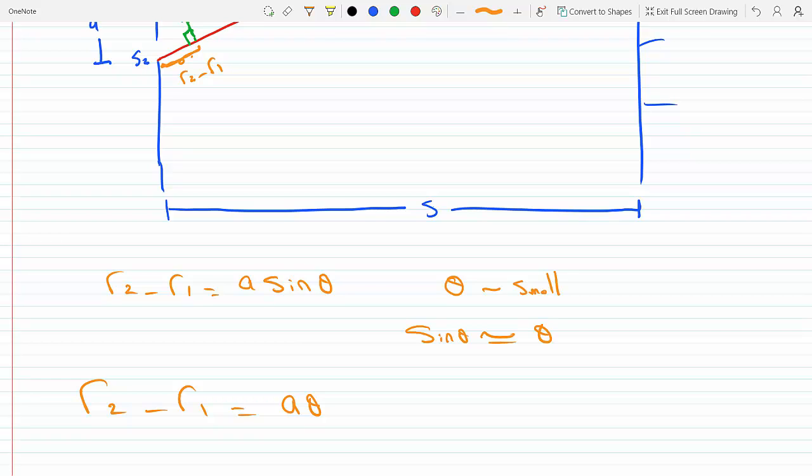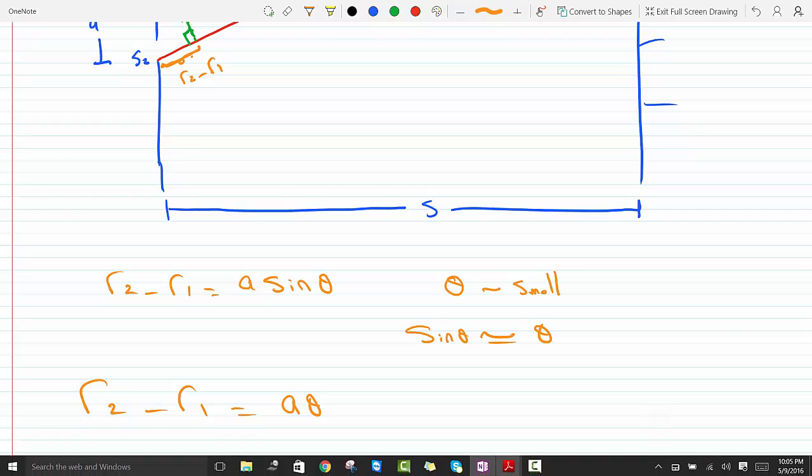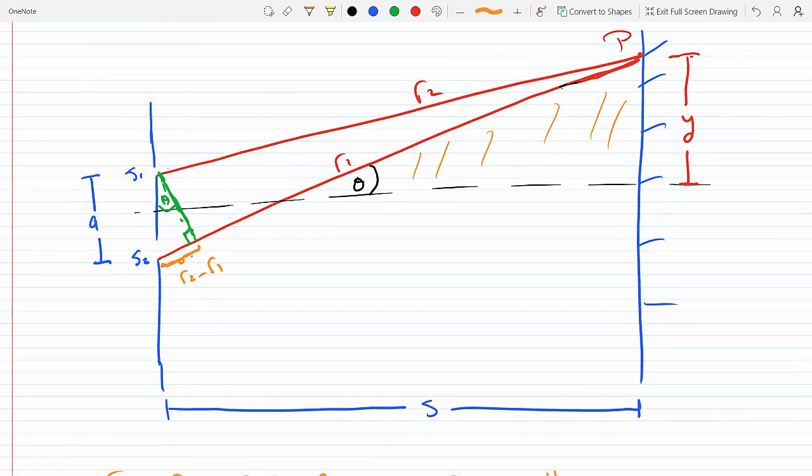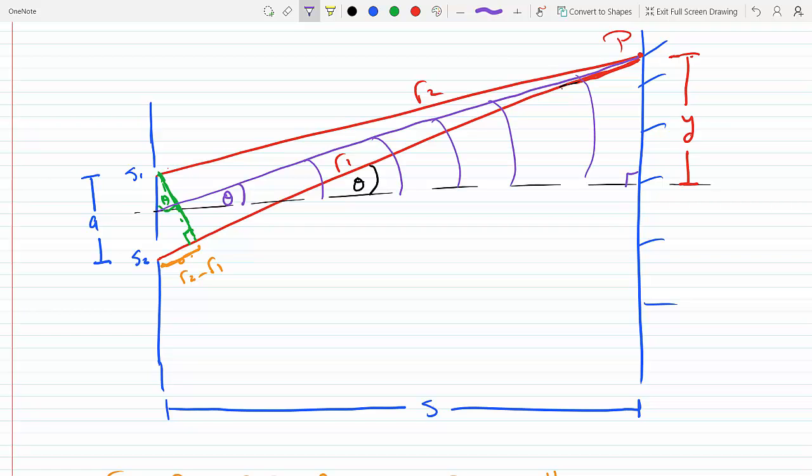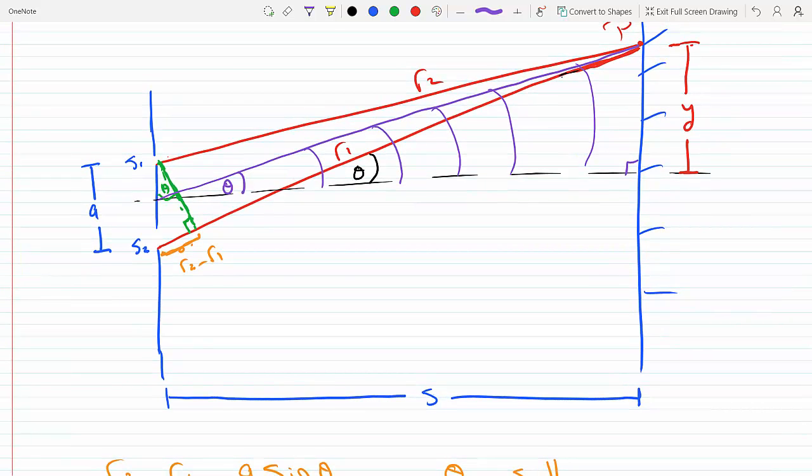Let me show you here that if I also connect this line here with the same point P, this angle here is also theta because we are saying that r1 and r2 are very long to a point that they're almost the same, which means they're almost parallel to each other. So we can do this approximation, and from this triangle, we can see that sin theta, which is almost theta, is approximately equal to y over s.